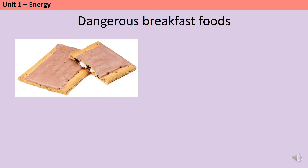Now obviously that can't be the case. If you've just taken something out of a 200 degree oven, the entire thing has a temperature of 200 degrees, so there can't be a difference in temperature. But what there is a difference in is the amount of energy stored in the outside pastry and the inside filling, and that's because of something called specific heat capacity.